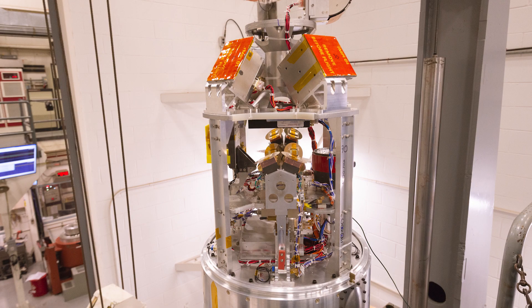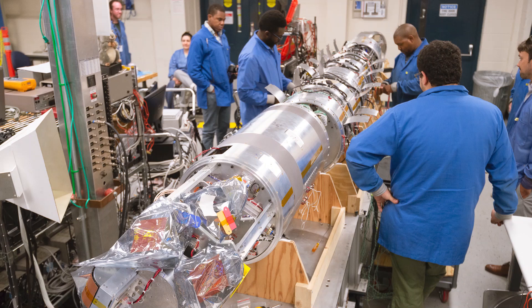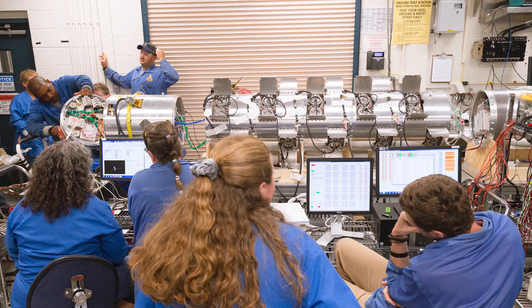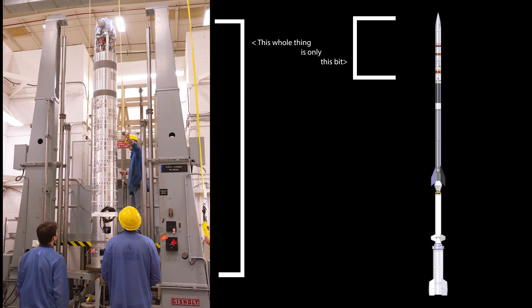All of this stuff is neatly packed into the payload section of the rocket, and here's a photo of the payload section during the build process at NASA Wallops Flight Facility. People sometimes get the impression that sounding rockets are small, but you can see that's not necessarily the case. And remember, this is just the payload, it's only a fraction of the total vehicle.